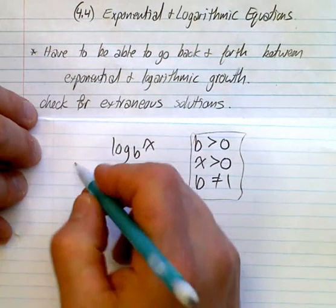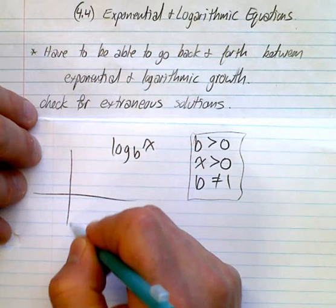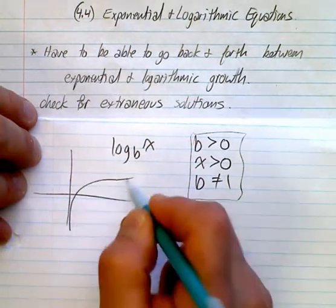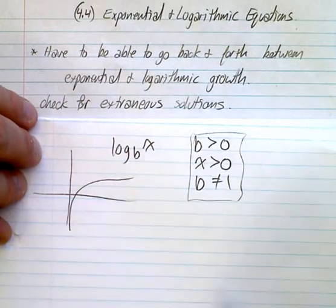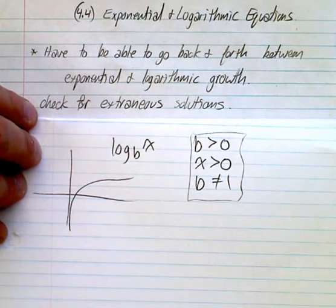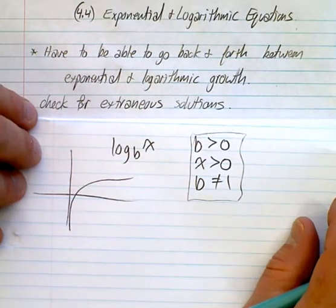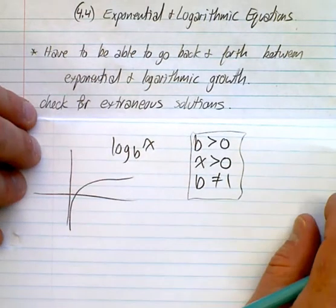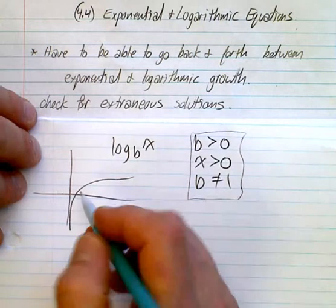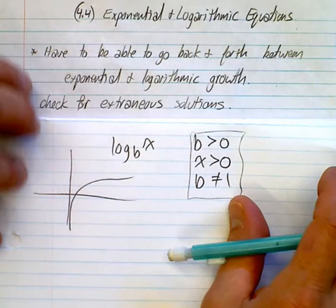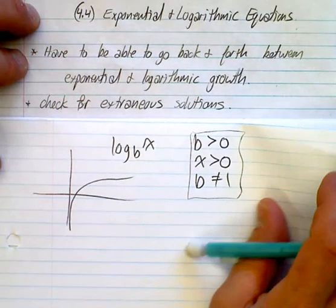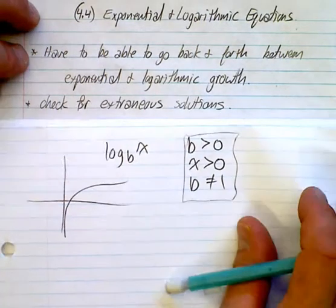If you want to look for the reasons behind why we have these restrictions, look at a graph. If you quickly look at a graph, this is your log function — x has to be greater than 0. Notice our base — well, that's a whole different topic, so let's just move on.